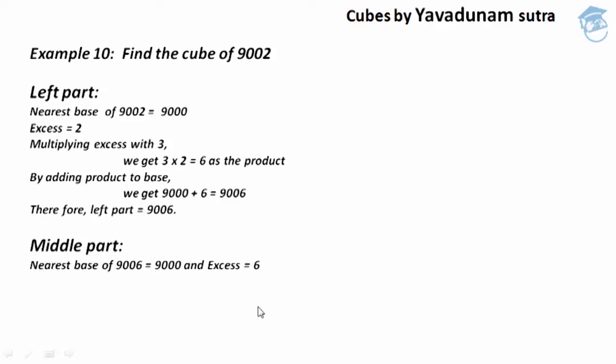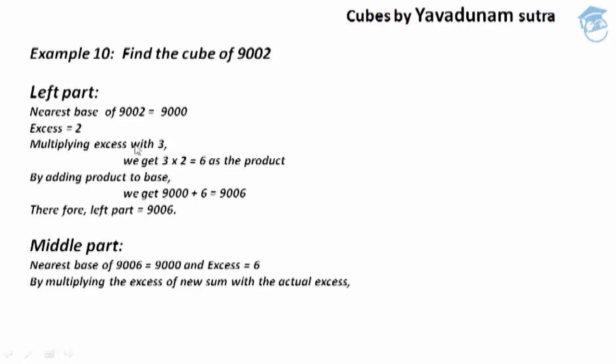Moving to step number 2, we have to multiply the new excess with the actual excess. The new excess is 6 and the actual excess is 2. By multiplying 6 into 2, we get 12 as the product, and this product 12 is regarded as the required middle part.